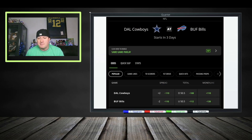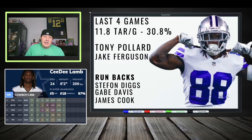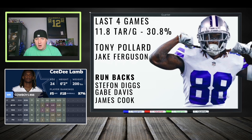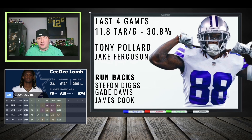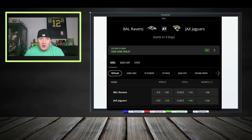Cowboys at the Bills — 50.5 over/under, another exciting one. CeeDee Lamb: 30% target share, 11.8 targets per game over his last four games. Tony Pollard is getting opportunities — streaky but touches are touches. Jake Ferguson is dependable at tight end, getting goal-line usage. For the Bills: Stefon Diggs of course, Gabe Davis is stepping up in targets per game and getting air yards. James Cook is working the passing game and being very steady.